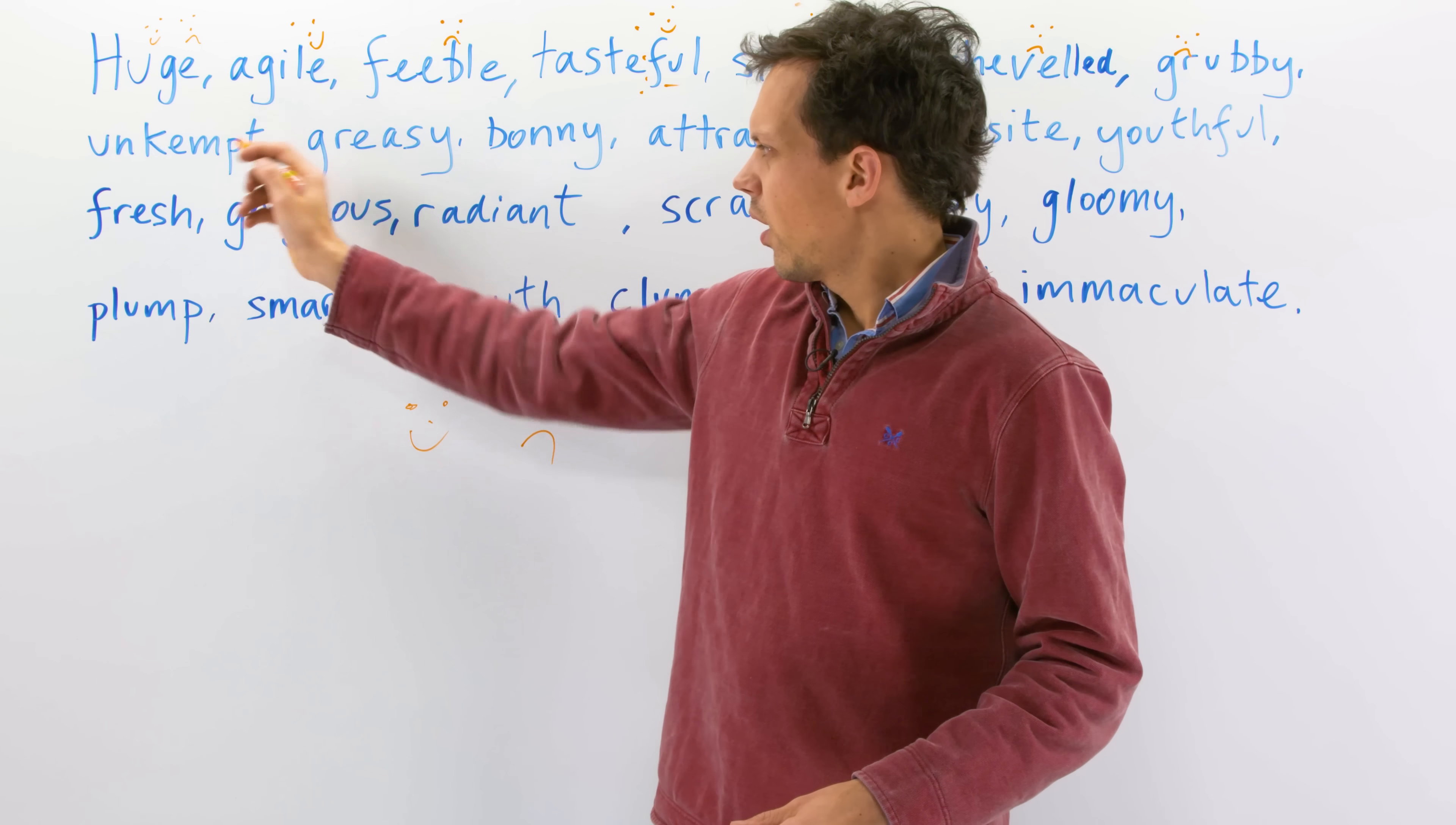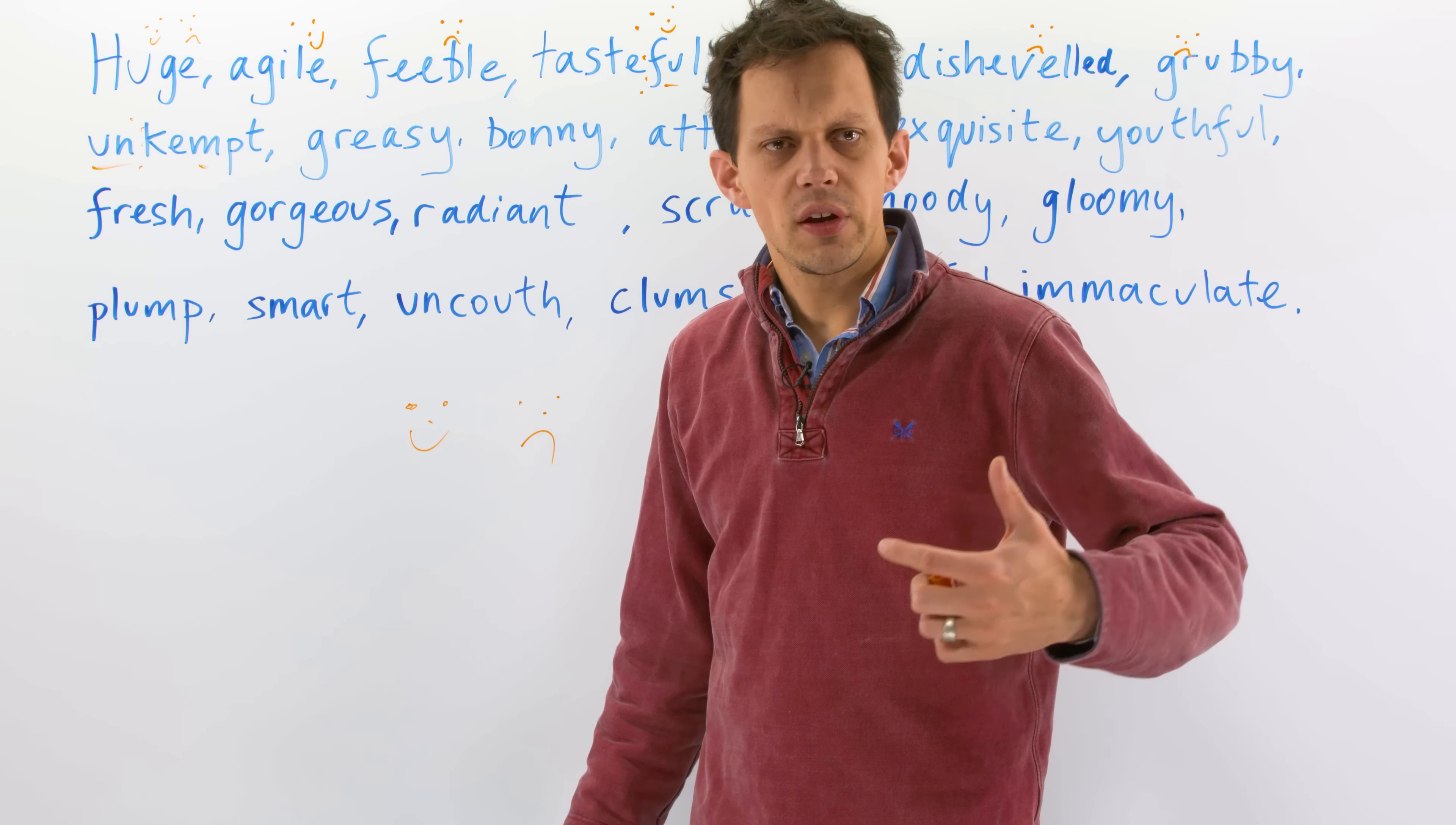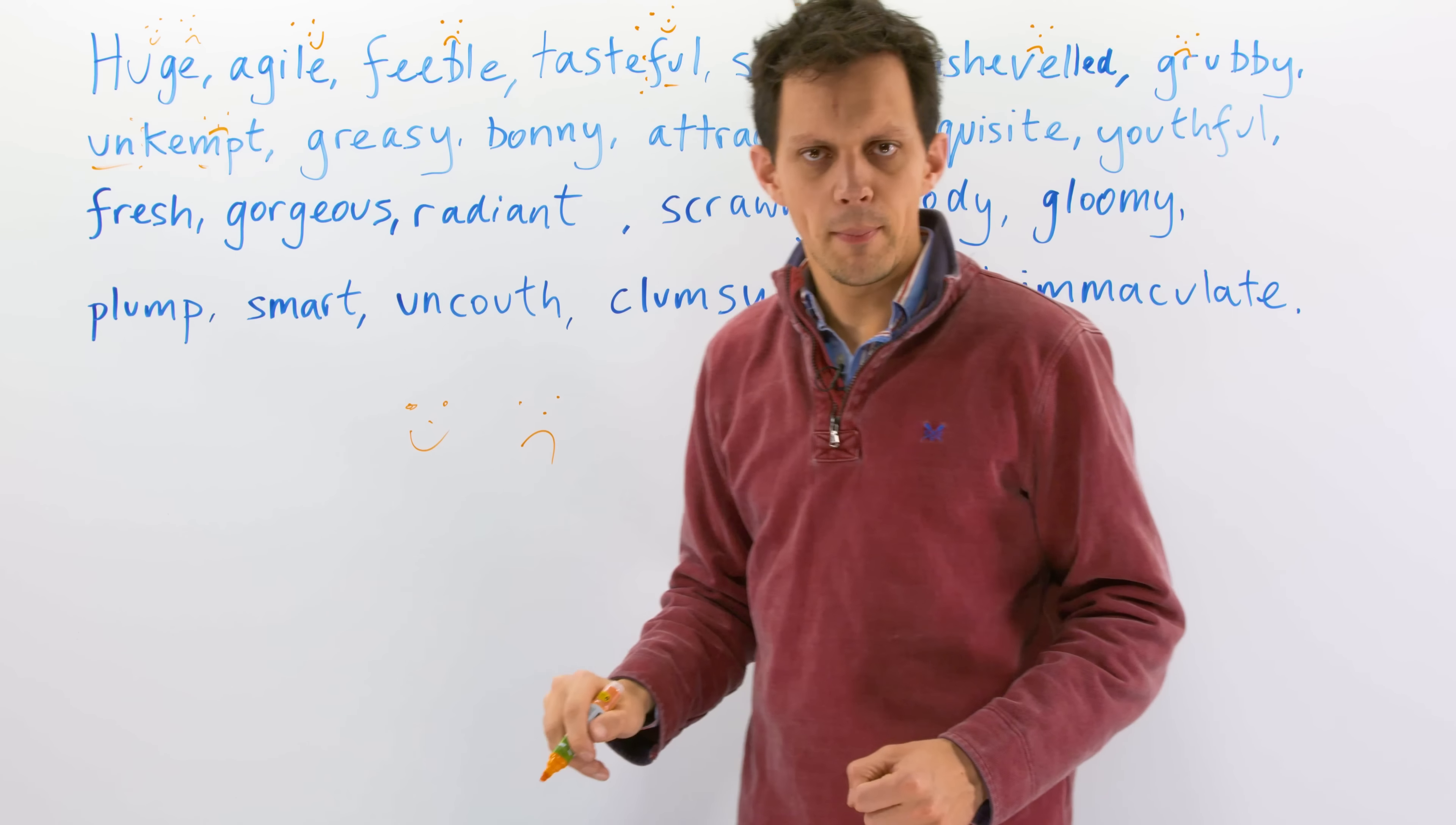Unkempt. So, the prefix un- means not. Kempt means looked after. So, if you are unkempt, we get the idea that maybe the person has not washed for some time, they haven't brushed their teeth, their clothes are falling apart. So, we don't want to be unkempt.